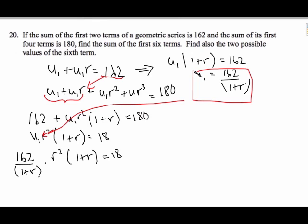I can see that there's some nice canceling out to do. I can cancel, cancel. And so, I get, divide by 162, R squared equals 18 over 162, which is equal to 1 ninth. If I take the square root of both sides, R is going to be plus or minus 1 third.